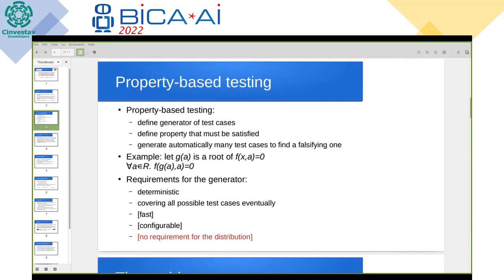I have argued that certain applications of object generators, both deterministic and random, may not require specific distribution. For example, property-based testing requires a generator that eventually covers every test case. Since distribution is not very important, we may want to optimize the time of generating a single object or the size of the sample generated per second or the diversity of generated sample.